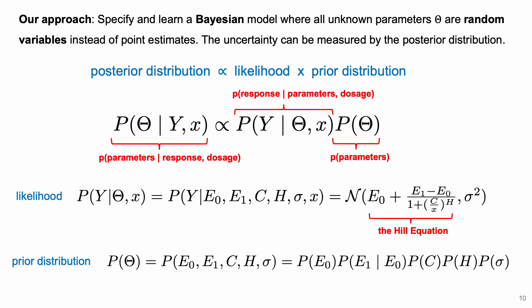We approach the uncertainty estimation by specifying a Bayesian model, where all unknown parameters are treated as random variables instead of point estimates. The uncertainty of the parameters is measured by the posterior distribution, which is proportional to the likelihood times the prior distribution of the parameters. The likelihood is defined to be Gaussian with IID noise, where the mean is parameterized using the Hill equation. The key reason we use the Bayesian paradigm is that the data size is very small, noisy, and distorted. By defining a prior distribution for the parameters, overfitting can be reduced, and the output will be conservative if we do not have sufficient evidence.